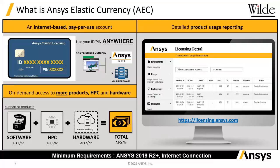One of the key benefits of this approach is the ability to interrogate usage through the licensing portal, giving insight into what software is being used and for how long, which can then inform decisions regarding the purchase of traditional licenses. For example, if you're consistently using five seats and consuming a lot of elastic currency doing so, you can see that happening and potentially purchase an extra seat when it comes to reviewing your traditional licenses.